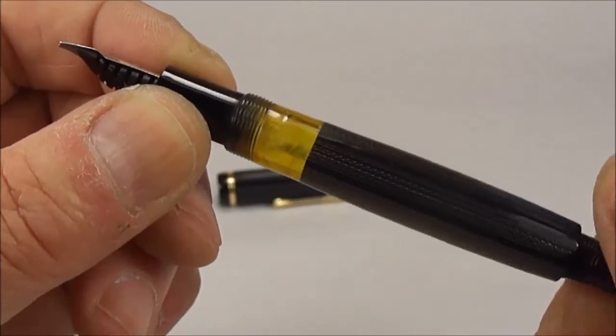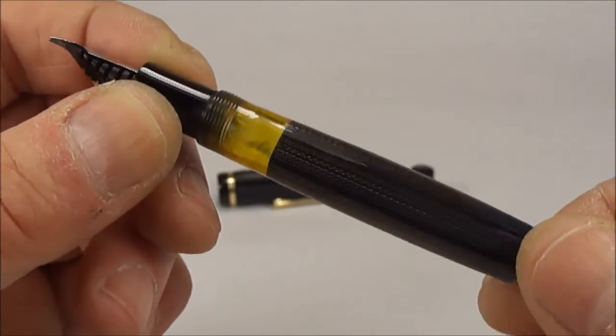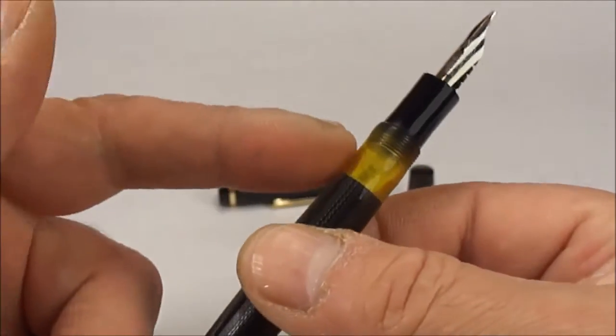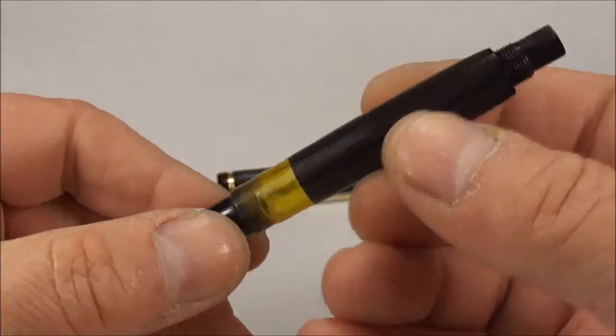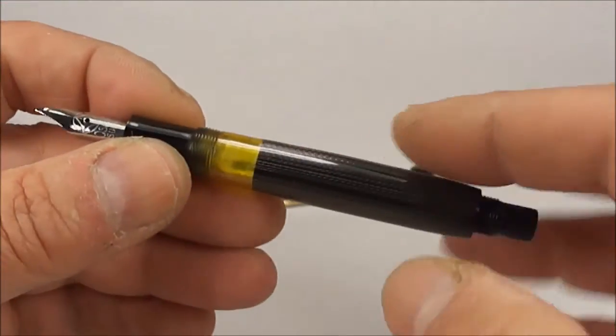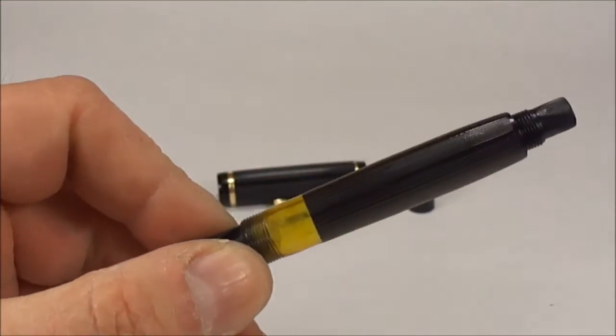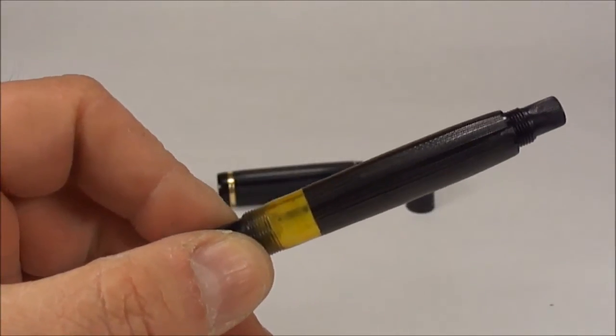Originally what these pens had they had a cork seal on the piston. What I've actually done is I've replaced this particular one with rubber o-rings. So as opposed to the original cork seal we've got o-rings fitted on this particular pen.